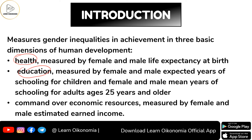The first aspect is health, the second aspect is education, and the third aspect is command over economic resources. Health is something that is very important for a person's life. For the same reason, here we are measuring health in terms of life expectancy at birth. When it comes to the Gender Development Index, we are considering the life expectancy at birth of female and male separately.